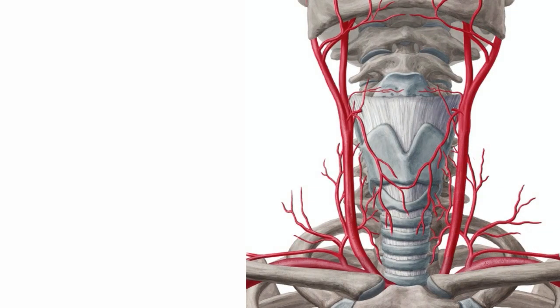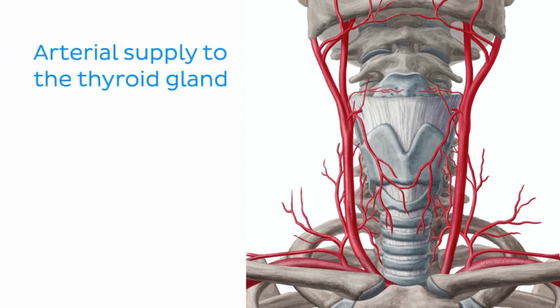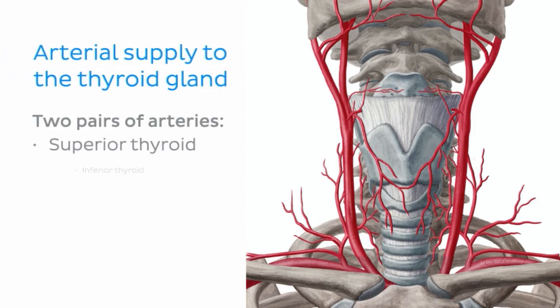The brownish-red, highly vascular thyroid gland receives blood from two pairs of arteries: the superior thyroid arteries and the inferior thyroid arteries.